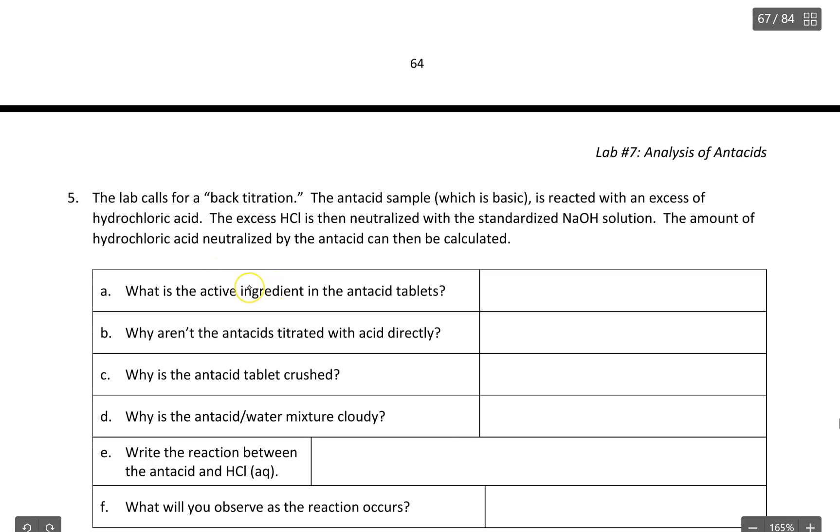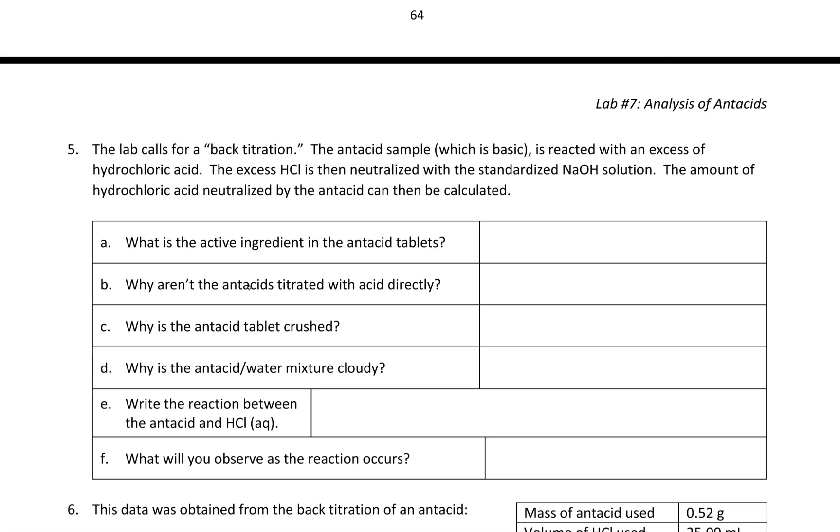Question five. The lab calls for a back titration. The antacid sample, which is basic, is reacted with an excess of hydrochloric acid. The excess hydrochloric acid is then neutralized with a standardized sodium hydroxide solution. The amount of hydrochloric acid neutralized by the antacid can then be calculated.